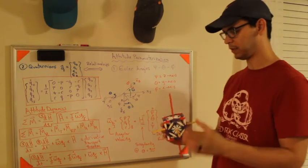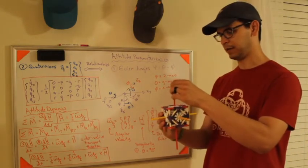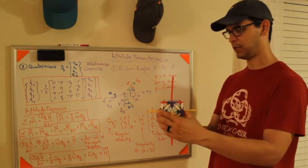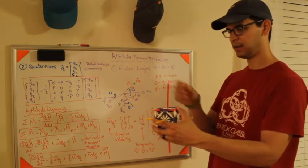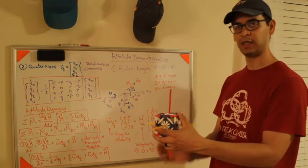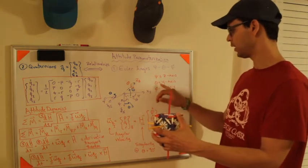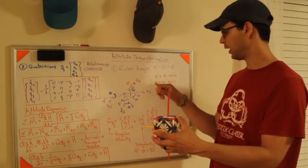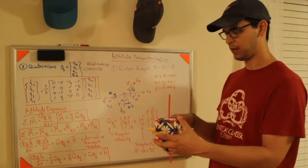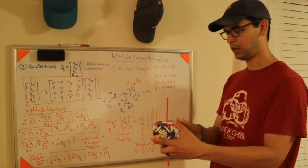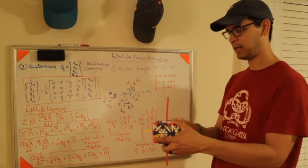What you basically do is, let's assume this red axis is the Z axis. You're going to do a finite rotation about the Z axis through an angle psi. So if psi was 45, you would rotate to here. You're then going to take the Y axis, the new Y axis, and rotate about that axis through theta, the pitch angle. So this is yaw, pitch, psi, theta.